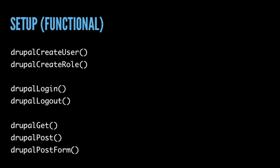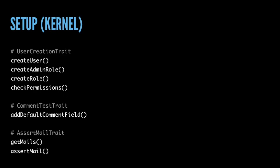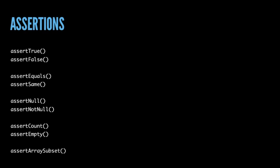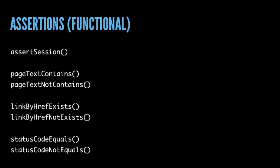Functional tests give us methods like drupalCreateUser, drupalCreateRole, login, logout, drupalGet for GET requests, and drupalPost for POST requests. Kernel tests give us similar things but we have to extend certain traits — a user creation trait giving us createUser and createRole, a mail trait for catching emails sent during tests. Examples of assertions include assertTrue, assertFalse, assertEquals — you get an assertion and its opposite. We can test if something is null or not null, empty or not empty, equal or not equal. Drupal-specific assertions let us check that a page contains certain text, that a link exists, or that a status code equals a certain value — 200 for a page that exists, 404 for one that doesn't.